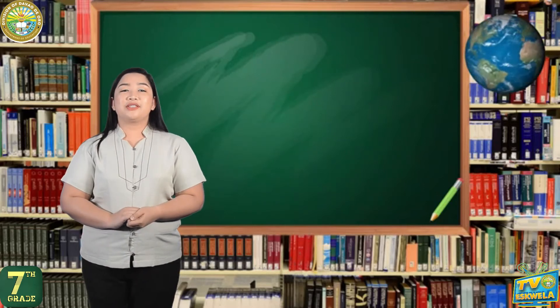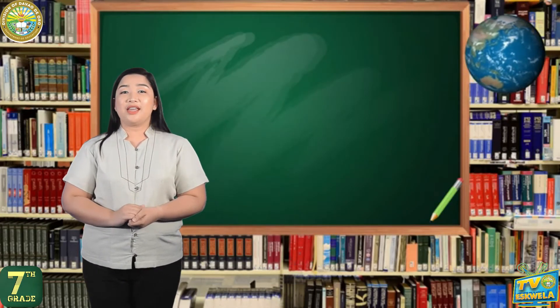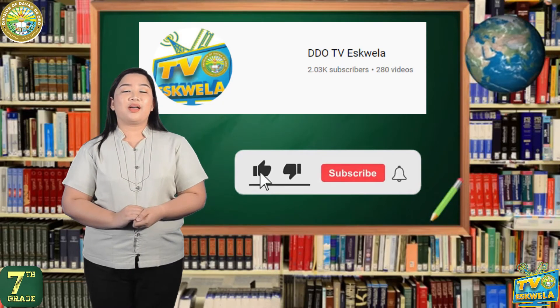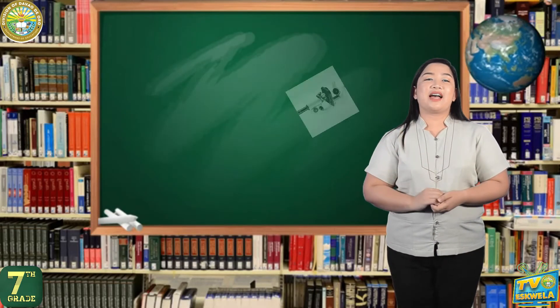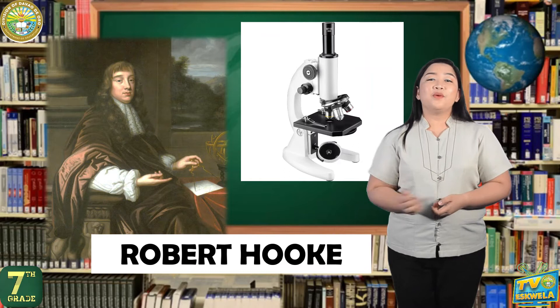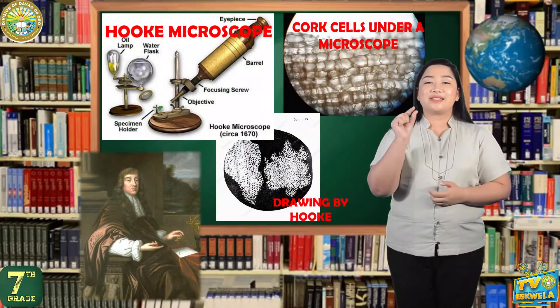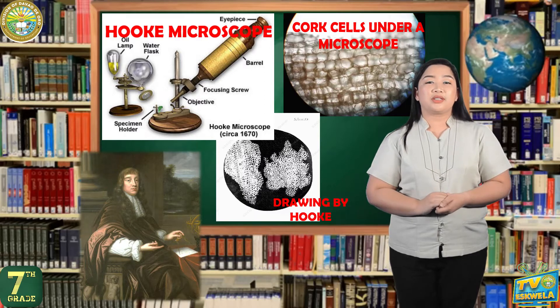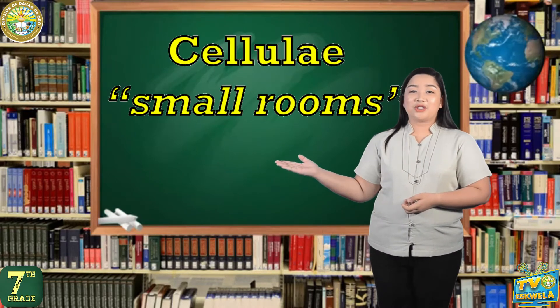In the previous lesson, we talked about the parts and functions of a microscope. If you still haven't watched the previous lesson, you can watch it again at the DepEd Davao de Oro TV Escuela YouTube channel to better understand our lesson today. We learned that a microscope enables us to see small things because of its ability to magnify. The first person to observe cells' microscopic structures was the British scientist Robert Hooke. In fact, he was the person who gave the cell its name. When Robert Hooke carefully examined a very thin slice of cork, he thought the close-up view resembled small empty rooms. He referred to these tiny rooms as cells, from the Latin word cellulae, which means small rooms.